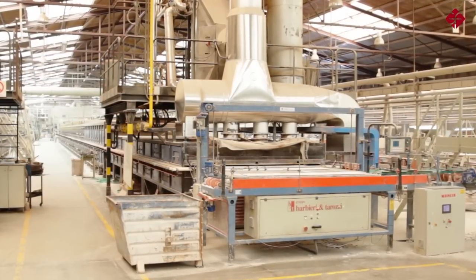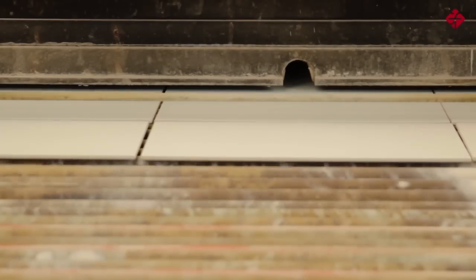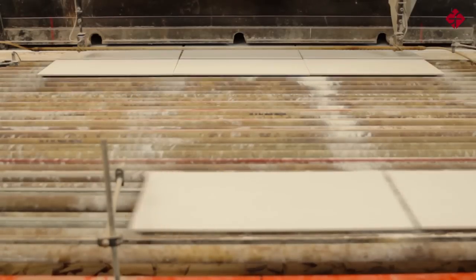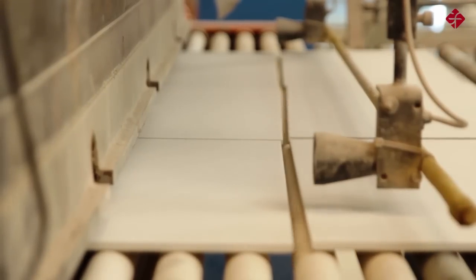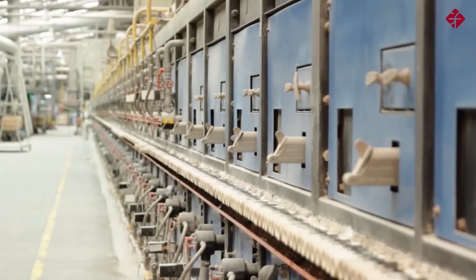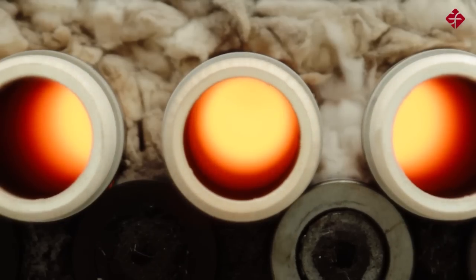These kilns are fired by gas. They have a relatively low yet wide chamber measuring about 2.5 meters across and are around 110 meters long, enabling a large number of tiles to be fired at the same time. They reach a maximum temperature of somewhere between 1100 and 1200 degrees centigrade. The flame is in direct contact with the tiles being fired.